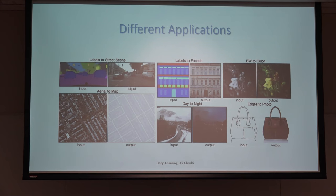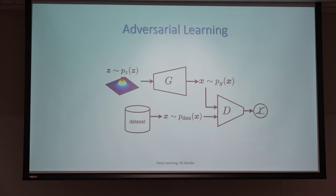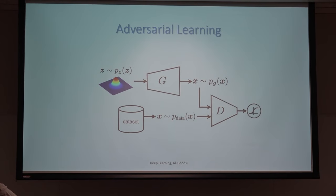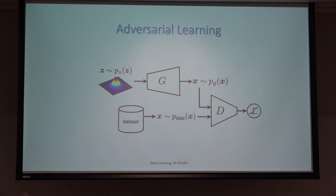We'll start with generating an image and then see how these applications can be done using GAN. The general form of GAN — generative adversarial network — is quite different in philosophy from whatever we have seen so far. It consists of two parts: a generator and a discriminator.